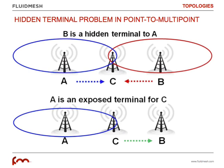Certain point-to-multipoint networks have two common issues called the hidden terminal issue and the exposed terminal issue. You need to be aware of these because when you have different remote devices — in this case we call them A and B in the top diagram — that are trying to transmit to a central device C, you might have a hidden terminal issue that will significantly decrease the overall performance of the network, unless you have a communication protocol in place that resolves this. You don't want to use the so-called CSMA type of protocol, the typical protocol used by Wi-Fi networks, in large-scale systems, because you will be affected by the hidden terminal issue and potentially by the exposed terminal issue.